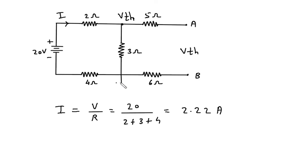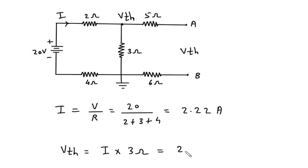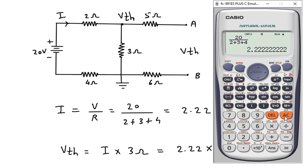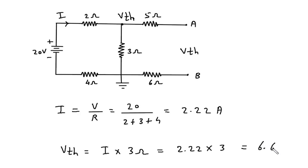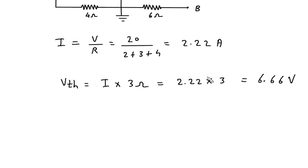Now let's assume this is ground. So from this, Vth will be equal to current I into this 3 ohm. So 2.22 into 3 gives 6.66 volt. This is the value of Vth, so Vth is equal to 6.66 volt.